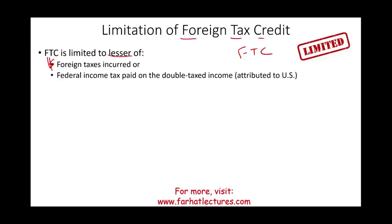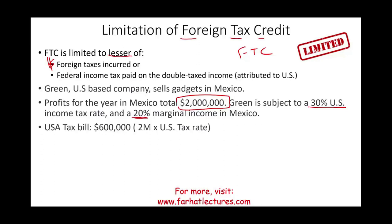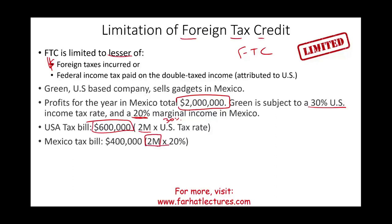Let's assume Green, a US-based company, sells gadgets in Mexico, and the profit totaled $2 million. Green is subject to a 30% US tax rate, but in Mexico Green is only responsible for 20%. Green's US tax bill is $2 million times 30% — that's $600,000. Since they operate in Mexico, they also compute their Mexican taxes: $2 million times 20% equals $400,000, which they must pay to the Mexican government.